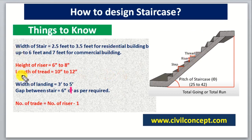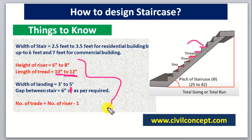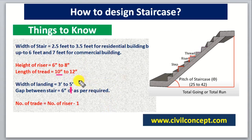The length of the tread should be 10 inches to 12 inches. What is the tread? This portion is known as the tread, and its width should be 10 inches to 12 inches. These values apply for residential as well as commercial buildings — you can use any value within this range.